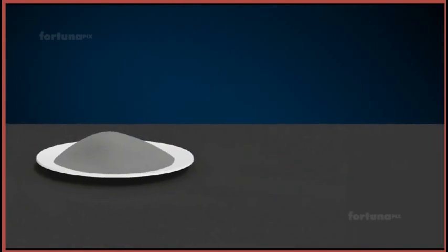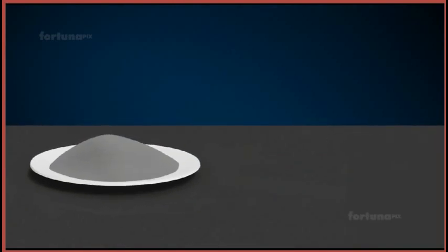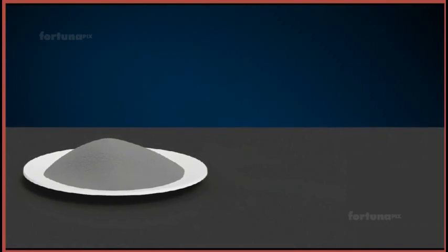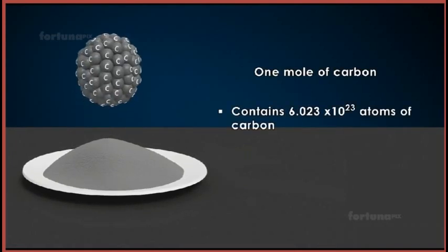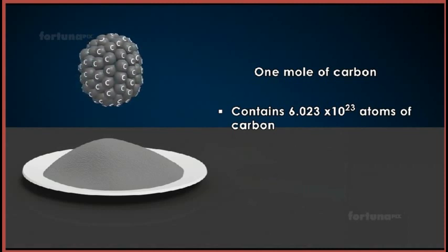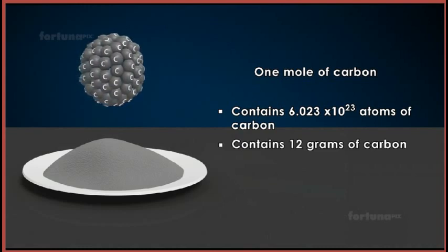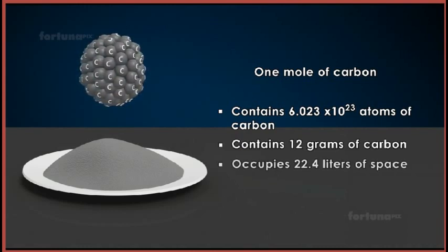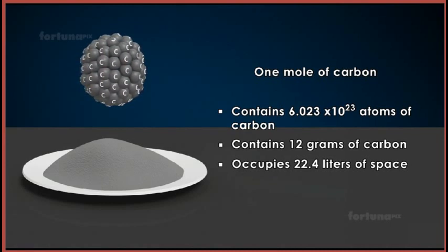Using carbon as our example, let's do a quick recap of the three principles of mole. One mole of carbon contains 6.023 times 10 to the power of 23 atoms of carbon. One mole of carbon contains 12 grams of carbon. One mole of carbon occupies 22.4 liters of space at standard temperature and pressure.